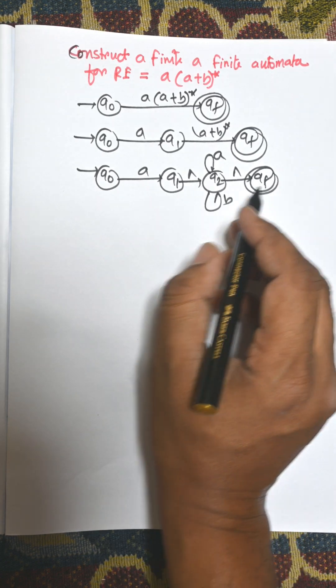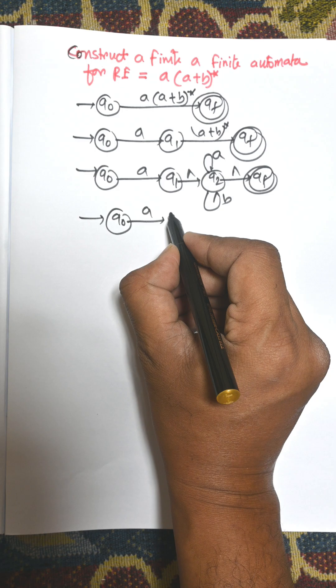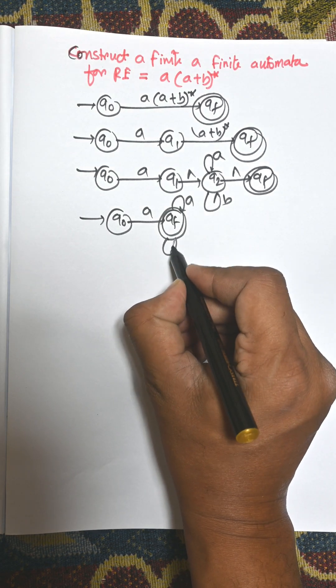Now remove all the empty symbols. We will get Q0 to A and this one is final state, and there is an A cycle and there is a B.